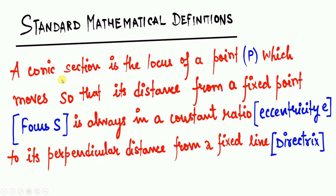The standard mathematical definition of a conic section: a conic section is the locus of a point which moves such that its distance from a fixed point — called the focus, represented by capital S — is always in a constant ratio, called eccentricity (represented by small e), to its perpendicular distance from a fixed line called the directrix. This definition is not required to fully understand right now — just memorize it, as objective questions in exams do ask for it.